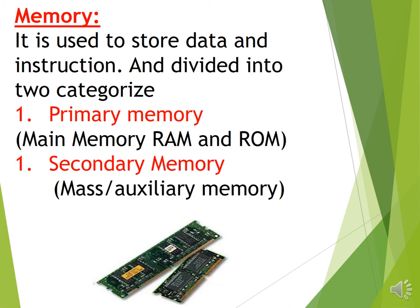Inside the computer, primary memory is used during processing. It uses RAM and ROM. Secondary memory is all external or auxiliary memory of the computer — for example, hard disk, USB, CDs, DVDs, and flash drive. RAM and ROM are primary memory, while secondary memory includes hard disk, USB, CDs, DVDs, and flash drive.